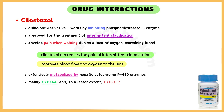Patients with intermittent claudication develop pain when walking due to a lack of oxygen-containing blood reaching the operating leg muscles. Cilostazole decreases the pain of intermittent claudication by dilating these arteries, which improves blood flow and oxygen to the legs.